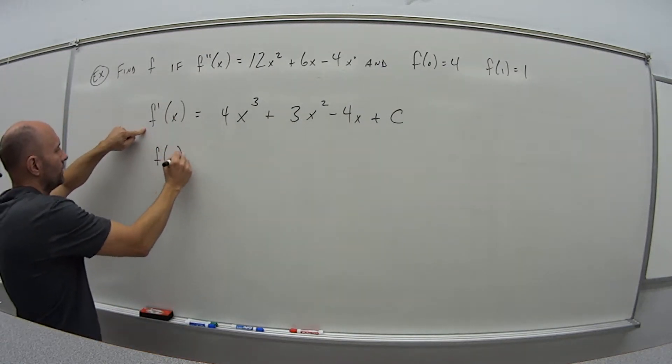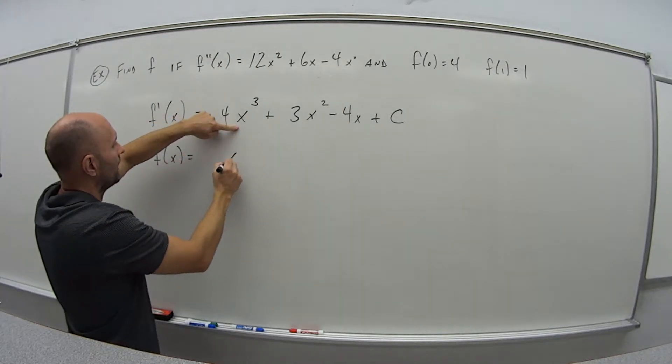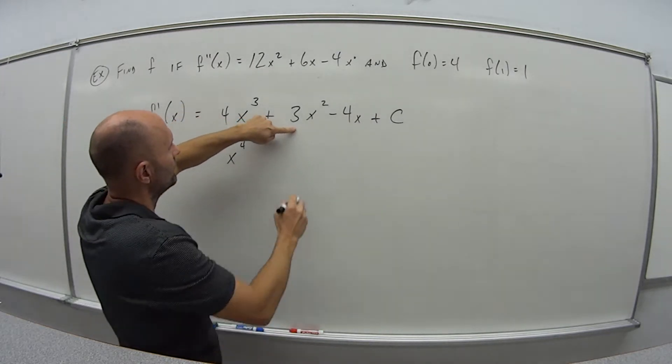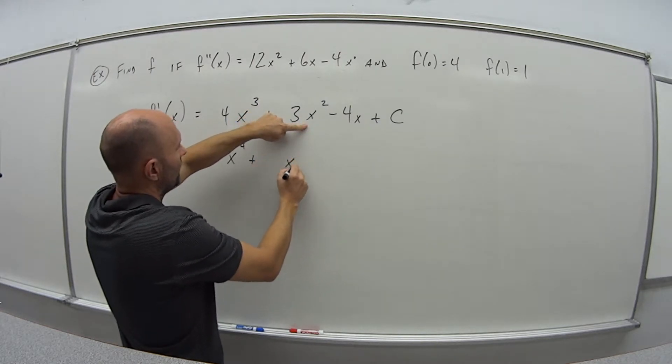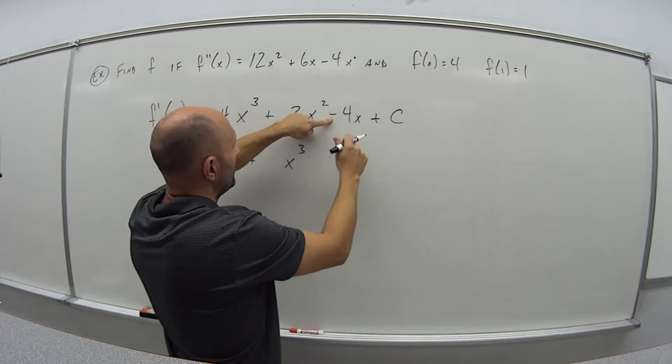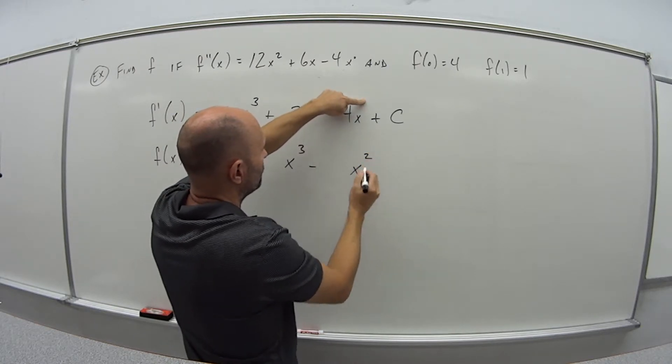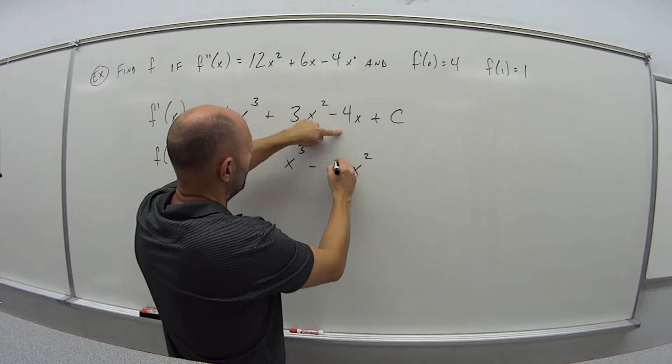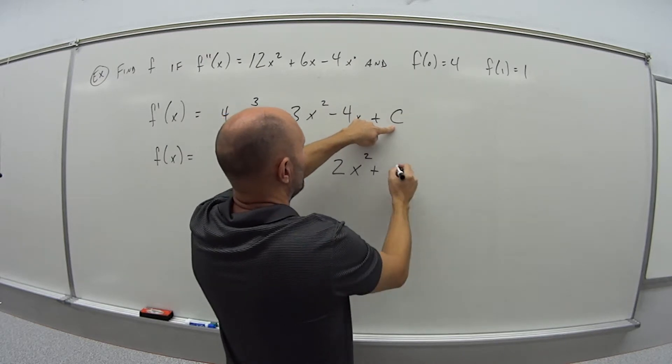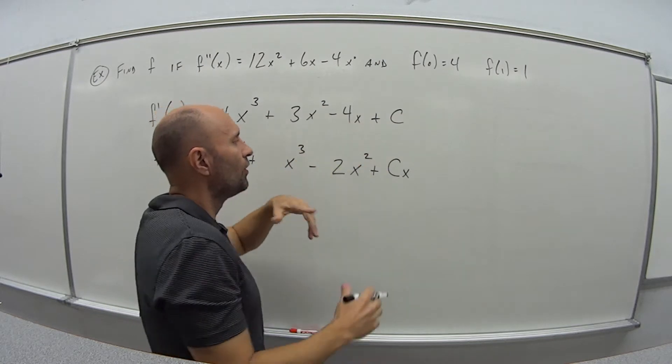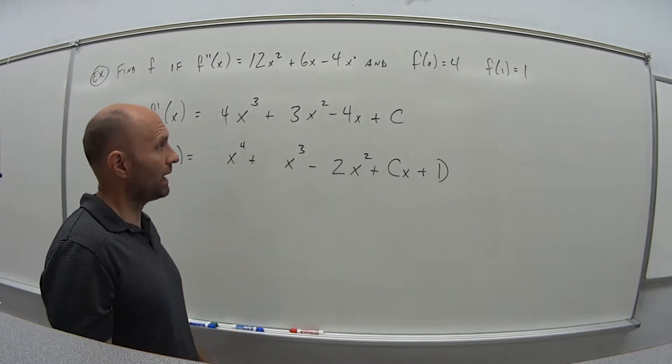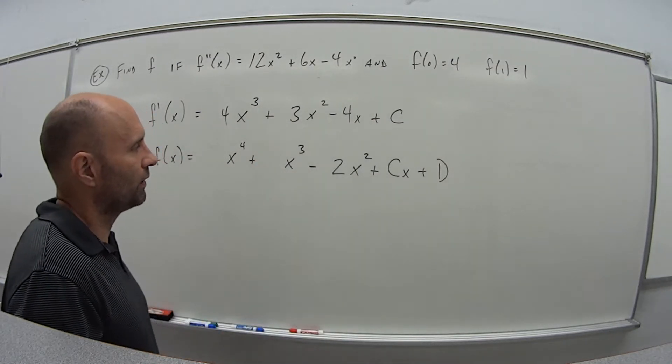So f, move one more level up, same process, repeated. So I add, x to the third, I'm going to add 1, 4. 4 divided by 4 is 1. Here, plus, it was x squared, I add 1. 3 divided by 3 is 1. And then in this case, I add minus, it was x to the first, so now it's squared. 4 divided by 2 is 2. Plus, there was no x here, it's like x to the 0, so add 1 gives me c times x. Plus d. Or you can call it c1, c2, or I don't know, a and b. Just two letters that are representing constants.